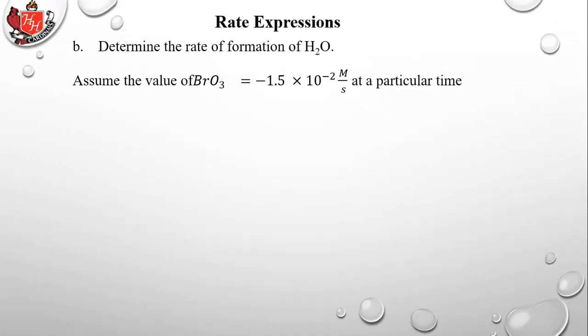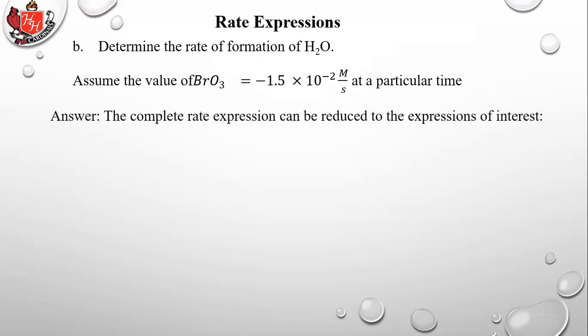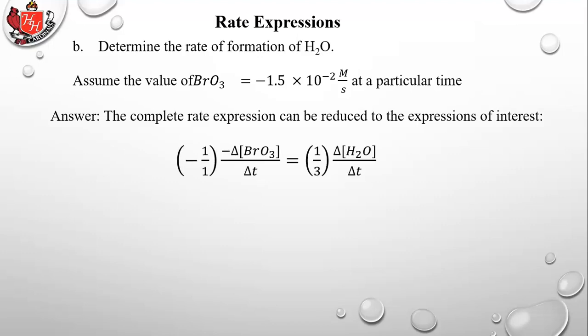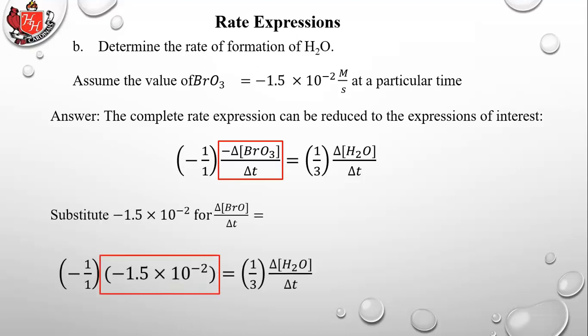Now let's do a numerical problem. Assume the rate of change of [BrO₃] is negative 1.5 × 10⁻² molar per second. The complete rate expression can be reduced to just the two parts needed: BrO₃ and H₂O. We pick those two out and leave the rest aside. Substitute negative 1.5 × 10⁻² in for the delta [BrO₃] over delta T term.